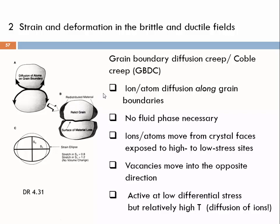So don't expect to see in thin section differently colored or texturally different growth seams. You might see that with other analytical techniques, but grain boundary diffusion creep — Coble creep — is not that easy to spot.